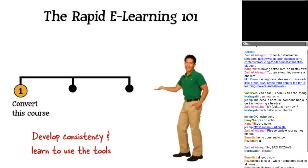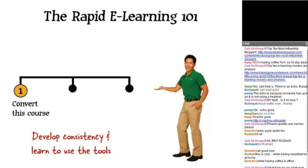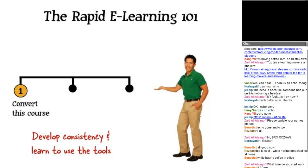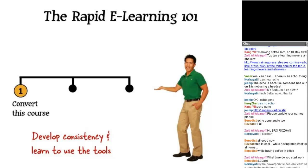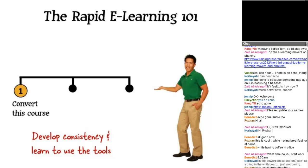Looking at the first stage — how do I convert this content and get it online — I take a practical approach. It's really about: develop a consistent production process, develop consistent styles and templates, and learn to use the tools you have. As you become proficient with your production process and tools, you can broaden. It's not that you have to do stage one before stage two and three — they overlap — but in that first stage the key is developing consistency and learning to use the tools.